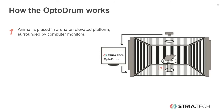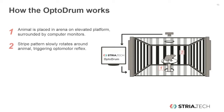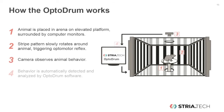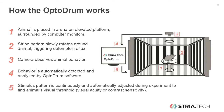How does the Optodrum work? The animal is placed on an elevated platform in the middle of the arena where it is surrounded by computer monitors. On the monitors, we show a rotating stripe pattern which can trigger the optomotor reflex. With the camera, we observe the animal from above and the Optodrum software detects the animal and analyzes its behavior. Then the stimulus pattern is continuously and automatically adjusted with a goal to find the visual threshold of the animal.